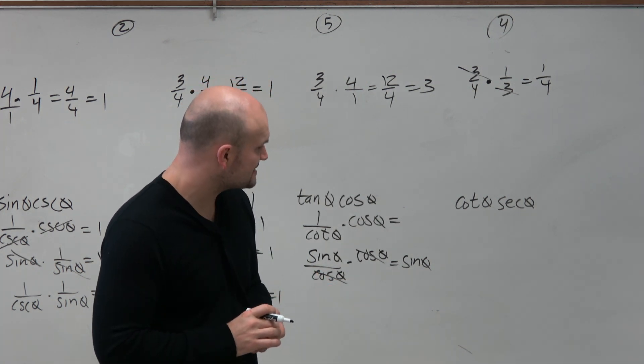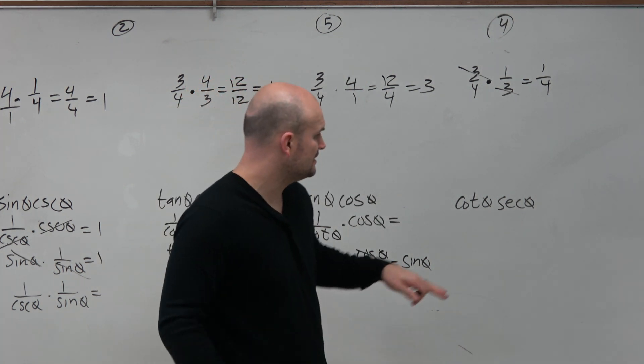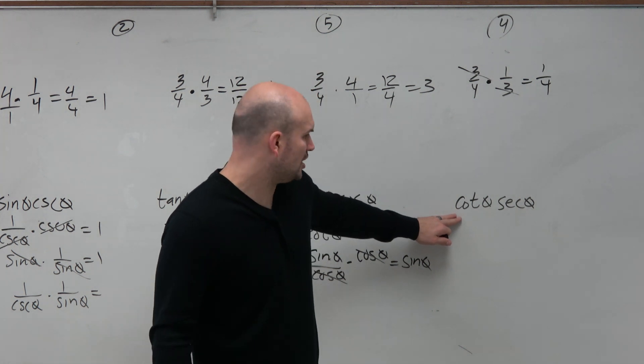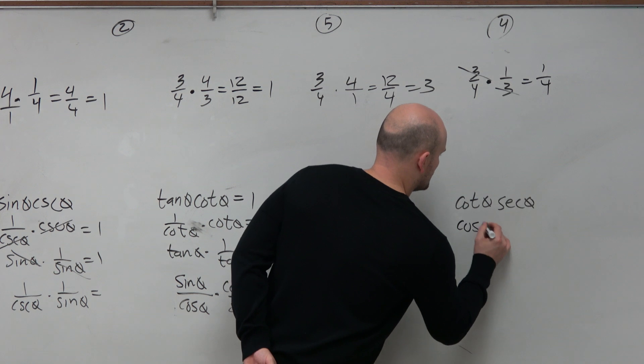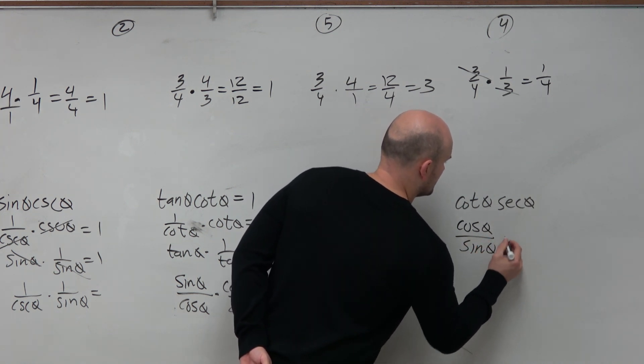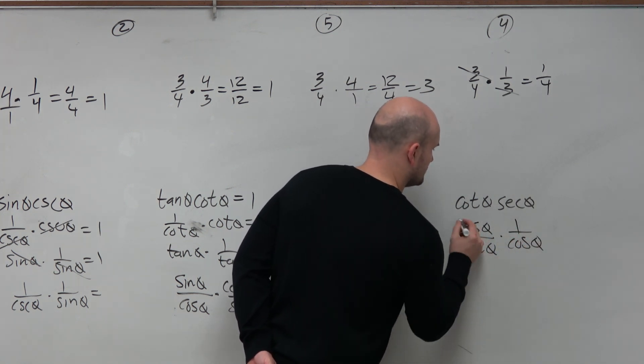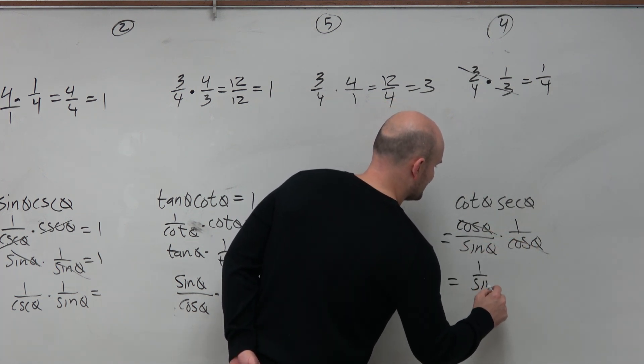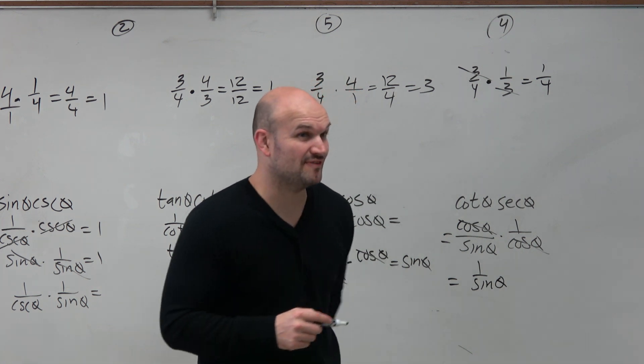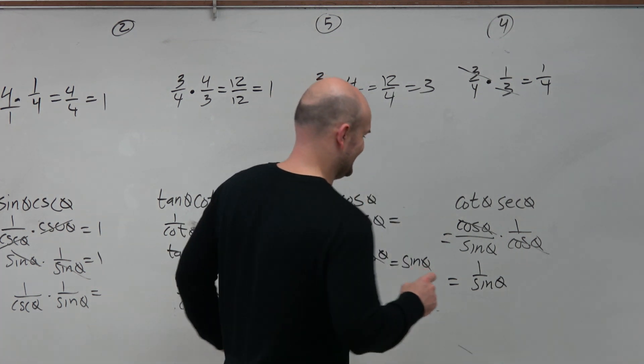I have a cotangent and I have a secant. Immediately, I think, if I write this as tangent, that's not going to help. If I put that as a cosine, that's not going to help. But if I put this as cosine of theta over sine of theta, and I write this as 1 over cosine of theta, that's going to leave me with 1 over sine of theta, which I could simplify one more time to give me cosecant.